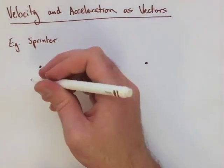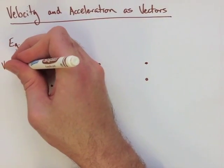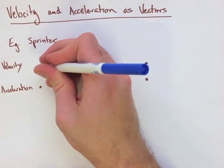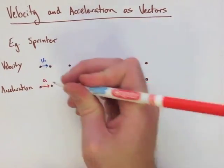For the first example, we're going to look at a sprinter. Let's say the sprinter has constant acceleration. So we're going to represent their velocity and their acceleration at five points to start a race.